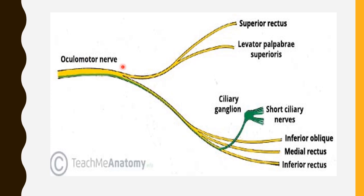At the superior orbital fissure, the oculomotor nerve divides into the superior branch and the inferior branch. The superior branch supplies the superior rectus muscle and the levator palpebrae superioris muscle. Sympathetic fibers traveling within the nerve's sheath take the course of the superior branch to supply the superior tarsal muscle, which keeps the eyelid elevated. The inferior branch supplies three muscles: the inferior oblique, the medial rectus, and the inferior rectus.